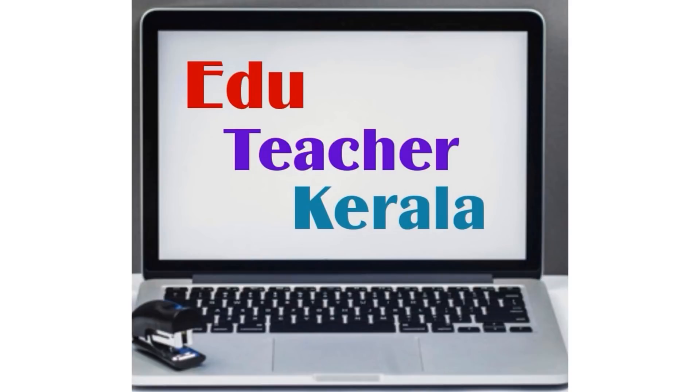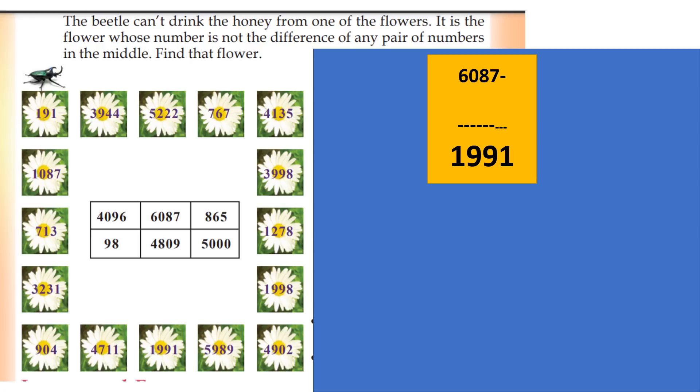Hi dears, welcome to the class. In the class, we are going to do the math activities. The beetle can't drink the honey from one of the flowers. It is the flower whose number is not the difference of any pair of numbers in the middle.